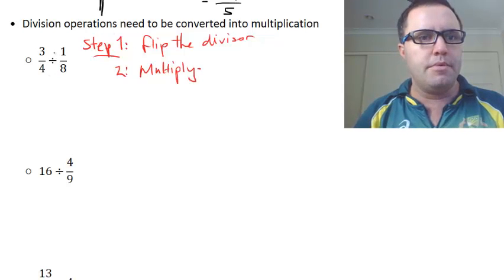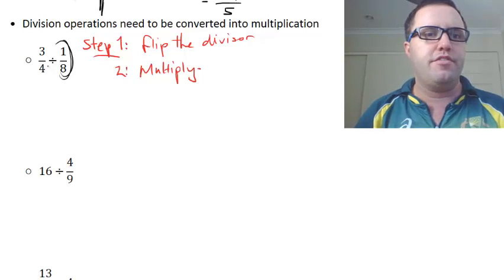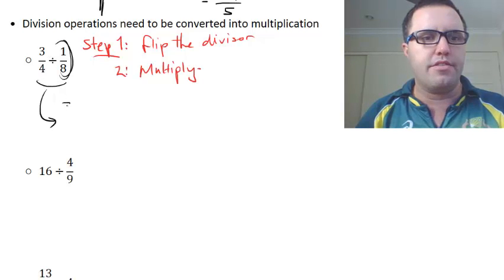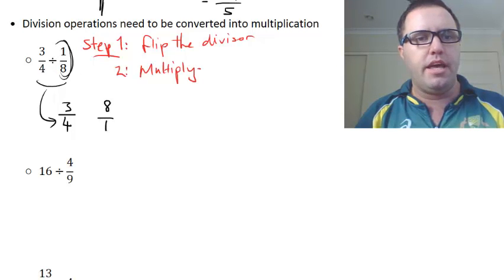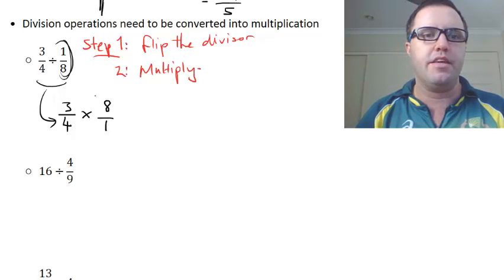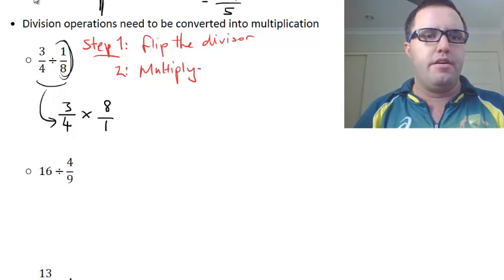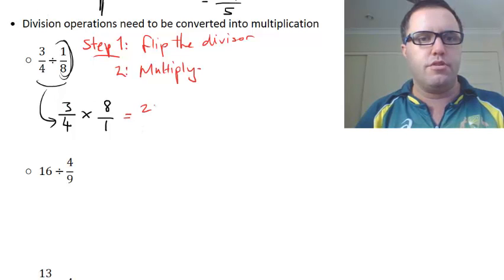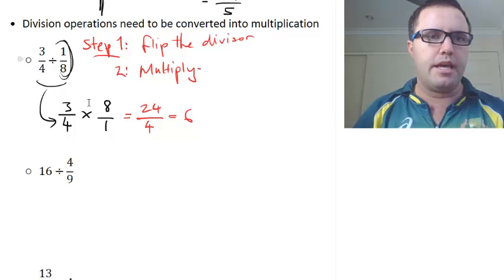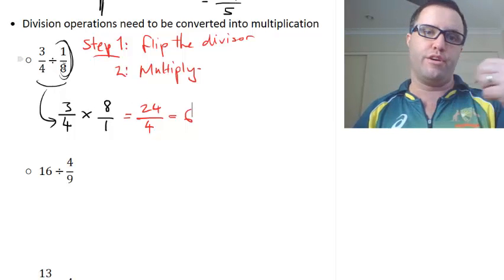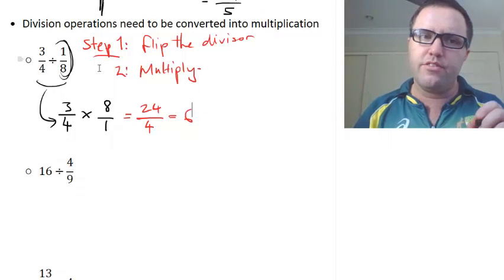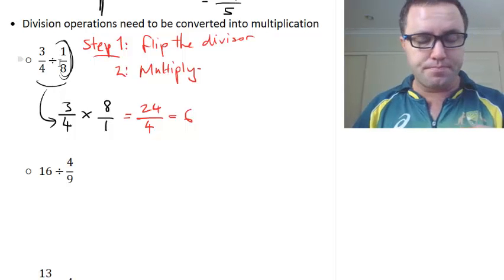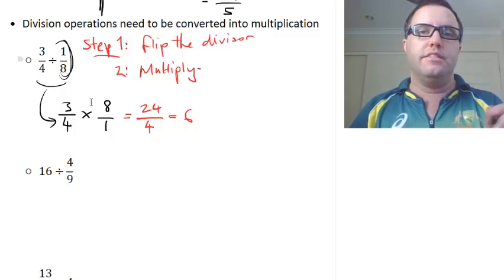So remember, divisor is this second one here. I'm going to rewrite it here, and now we have 3 over 4, that stays. This 1 over 8 flips to be 8 over 1, and instead of dividing now, we multiply. These are exactly the same. So 3 times 8 is 24, 4 times 1 is 4, 24 divided by 4 is 6. So this is saying, how many eighths are there in 3 quarters? Well, there's 6 of them. And that kind of makes sense. So even though 6 is bigger than these two individually, remember I said that earlier, that's sort of how division by fractions works.